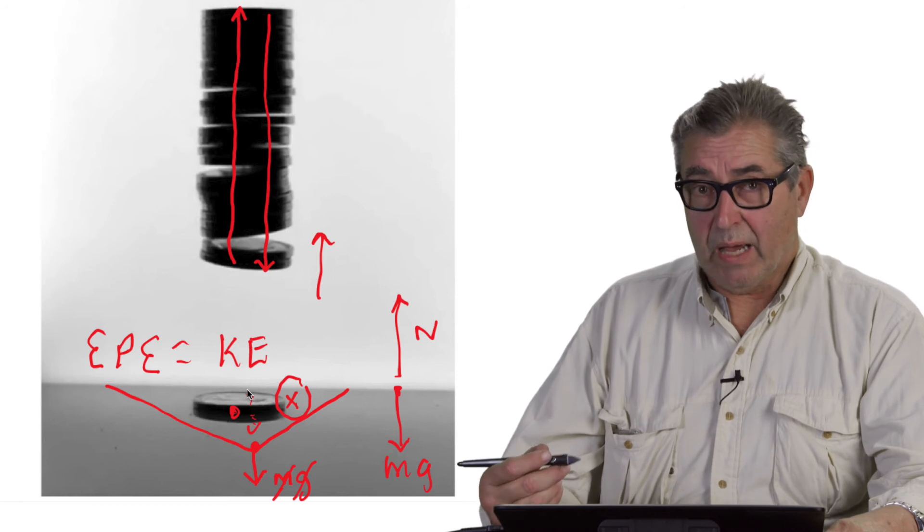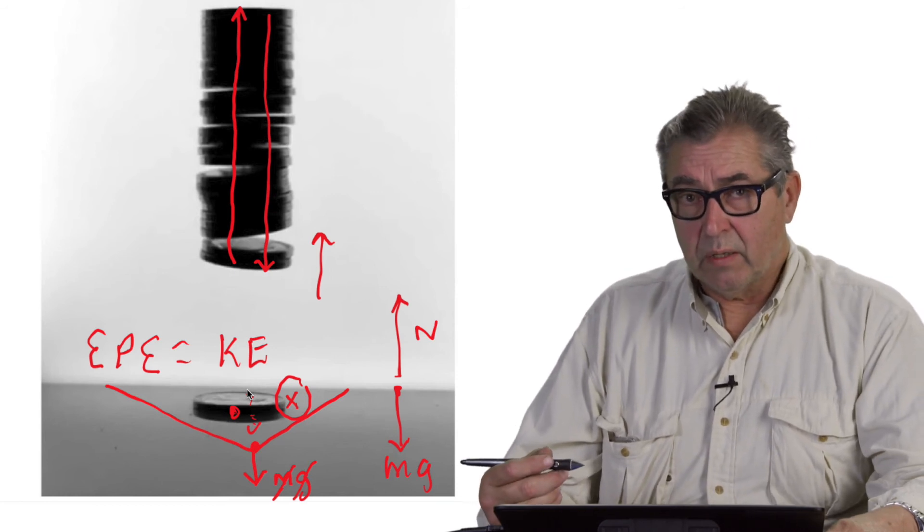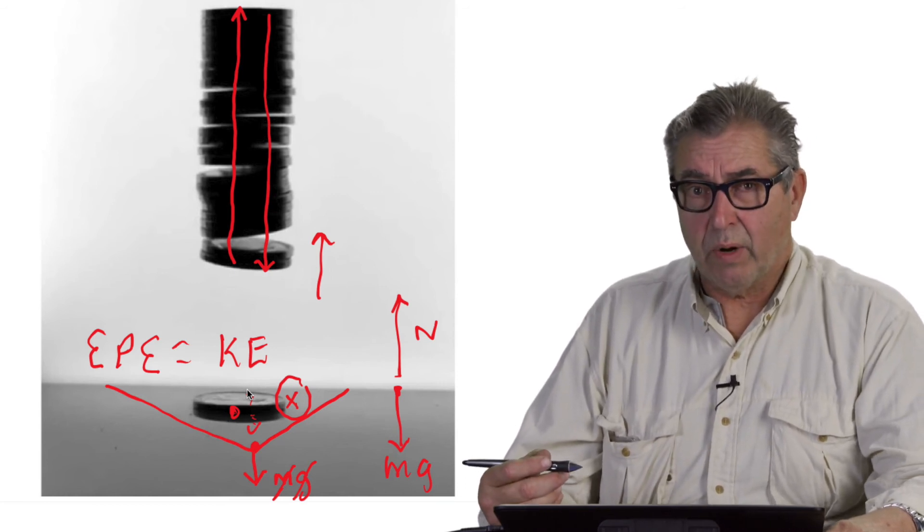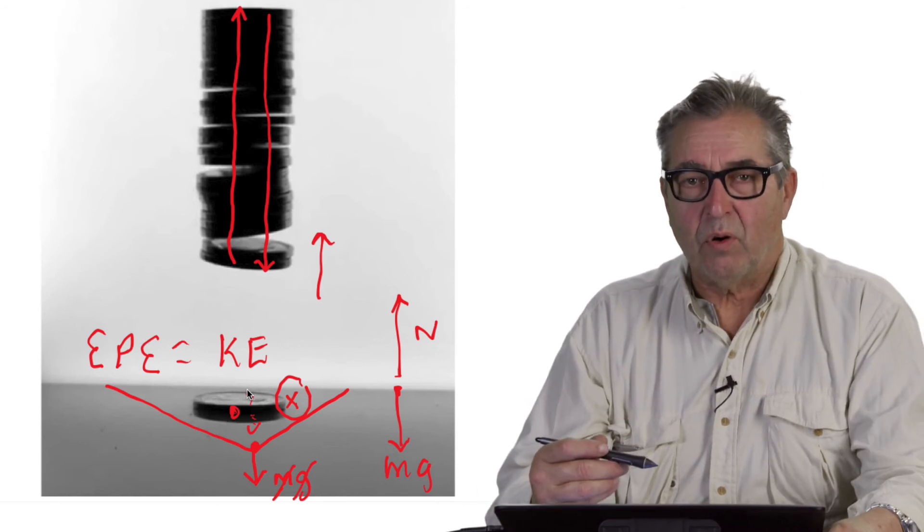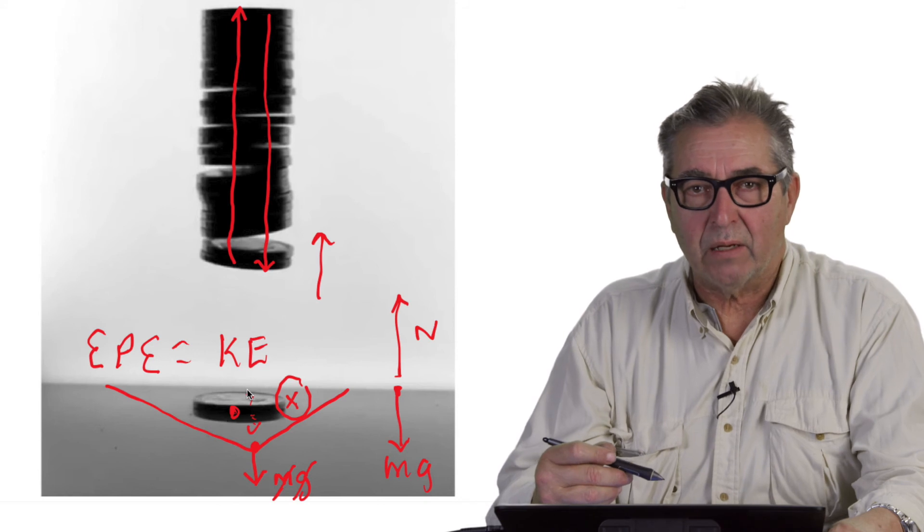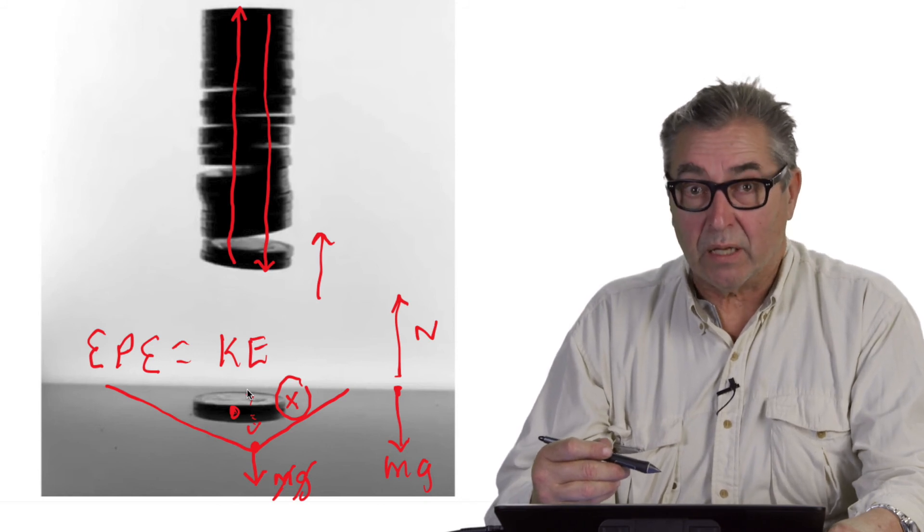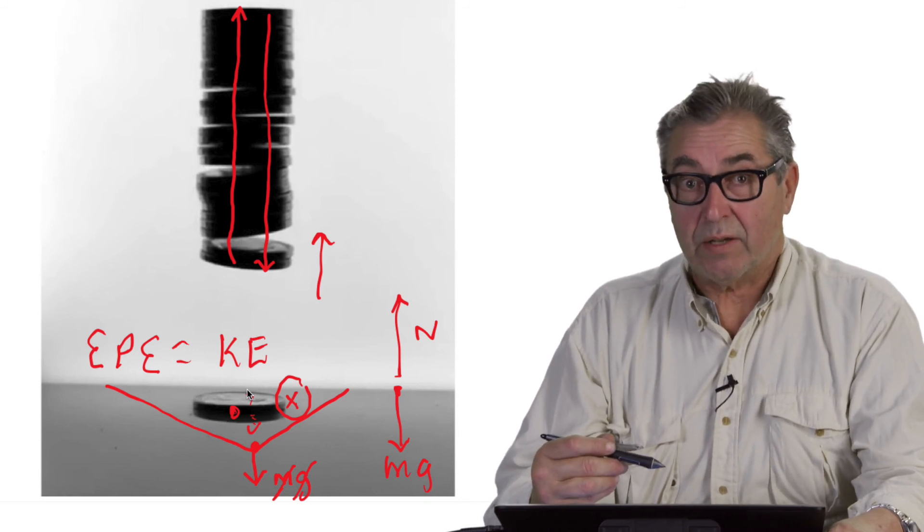What is amazing is that when the box decelerates at the rate of 15 Gs, this causes the stack of coins to come slamming back into the floor, and amazingly enough, does not topple over.